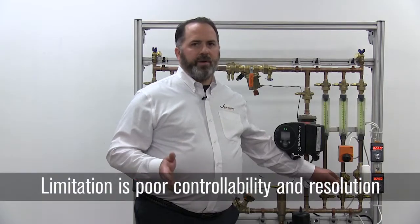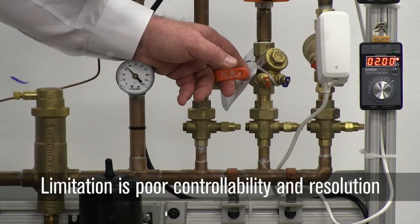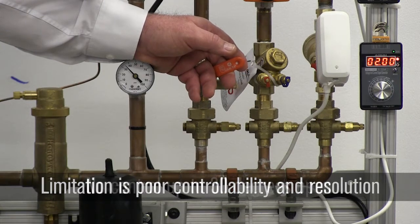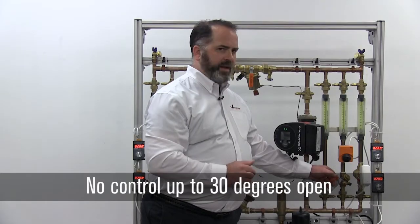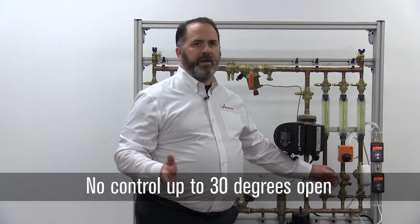If you look at the controllability of the valve, now I have the valve fully shut. Now I'm going to go to a point where we start to see flow on our flow meter. You'll notice I'm getting that valve to about 20 to 30 degrees open and I'm finally starting to see some flow on the meter.